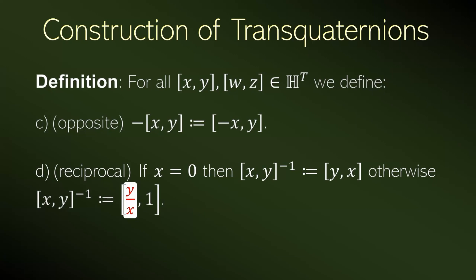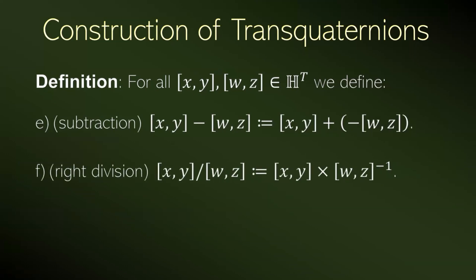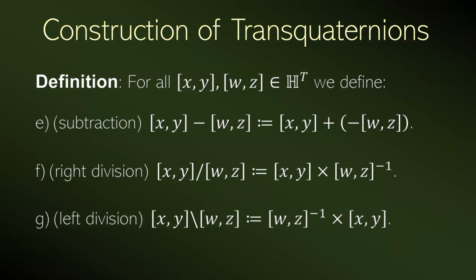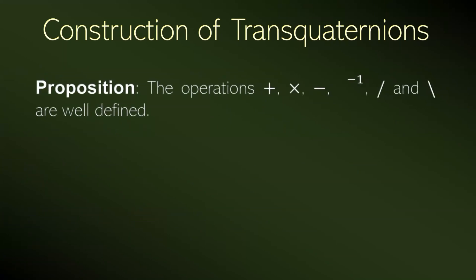The subtraction is the sum by the opposite. The right division is the right multiplication by the reciprocal. And the left division is the left multiplication by the reciprocal. All arithmetic operations are well defined, and this is proved in the paper in the Transmathematica journal.